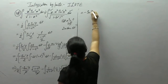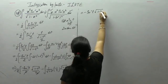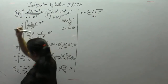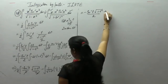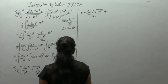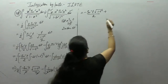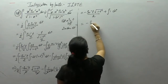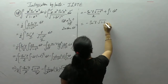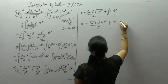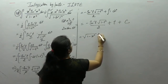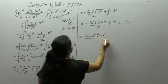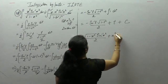Minus sin inverse t into (1 minus t²) upon 2, minus minus plus integral of 1 is t. Minus sin inverse t into square root of (1 minus t²) upon 2 plus t plus c. Here t is x², so the result is x² sin inverse x² upon 2 plus x² plus c.